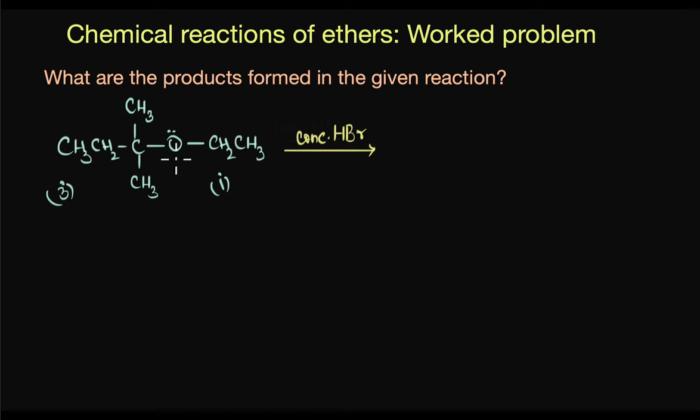The lone pair of electrons on the oxygen atom abstracts the proton and gives us the protonated ether. Now the next step is a nucleophilic attack. The bromide ion would attack this ether and give us the substituted product. Now in this ether where we have a tertiary alkyl group, the nucleophilic attack proceeds via SN1 mechanism.